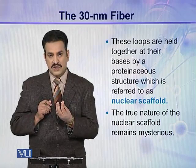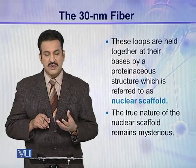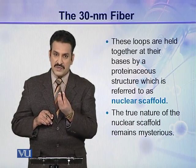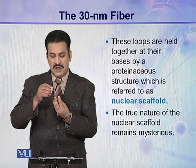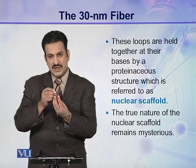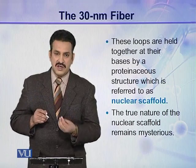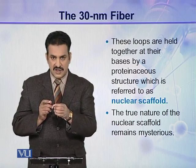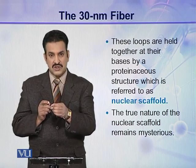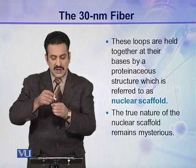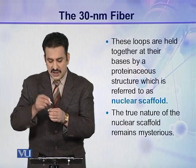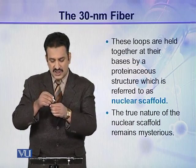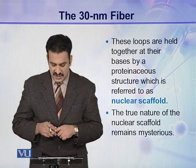As you may remember in the case of prokaryotes, a protein core was present and around that protein core, supercoiled loops and some relaxed loops were present. Similarly, in the case of eukaryotes, there is a nuclear scaffold in the center that makes the core, and around this nuclear scaffold, the 30 nanometer fiber forms loops. In this way, higher order folding is achieved.